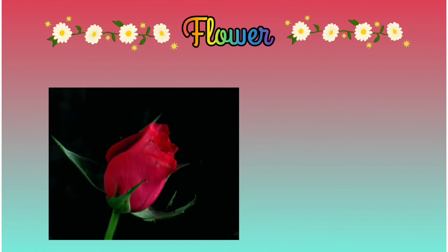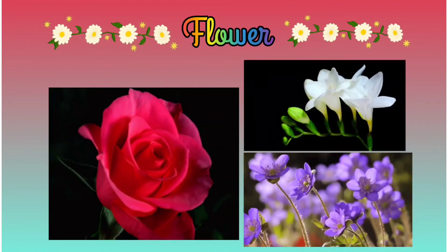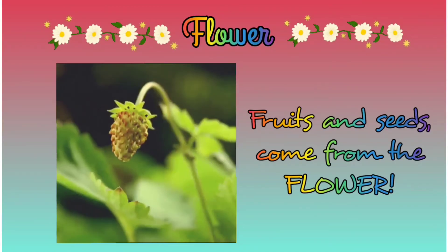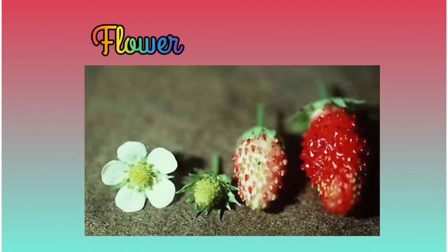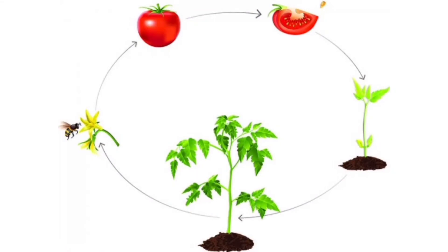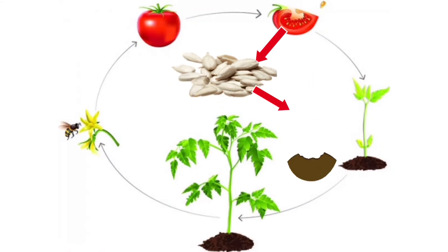Flower is the colorful part of the plant. Did you know that fruits and seeds come from the flower of the plant? Look at how flowers give rise to fruits. The seeds that are inside the fruit then give rise to new plants. Isn't it wonderful?